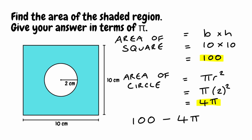We also need the units. Because our lengths were given in centimetres, the area is going to be given in centimetres squared. So because the question asked us to leave our answer in terms of pi, our final answer would simply be 100 take away 4 pi centimetres squared.